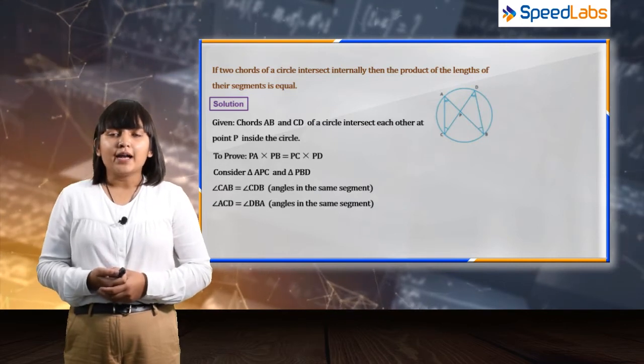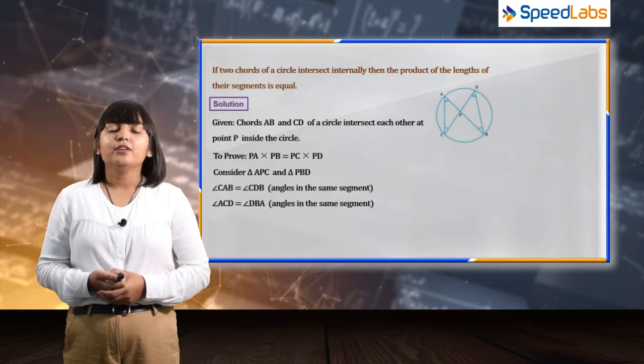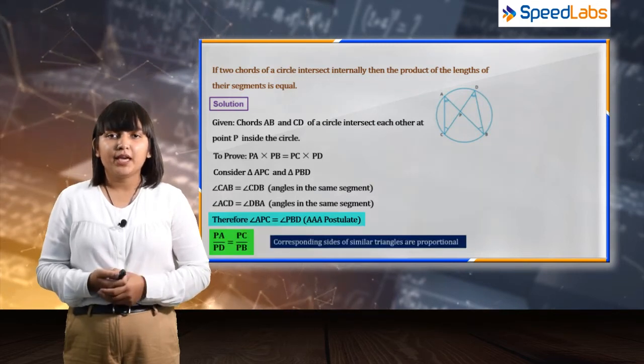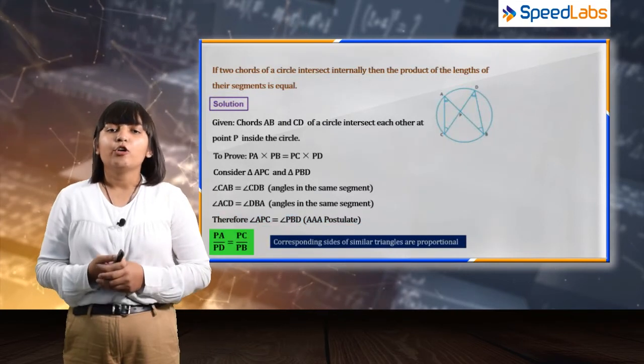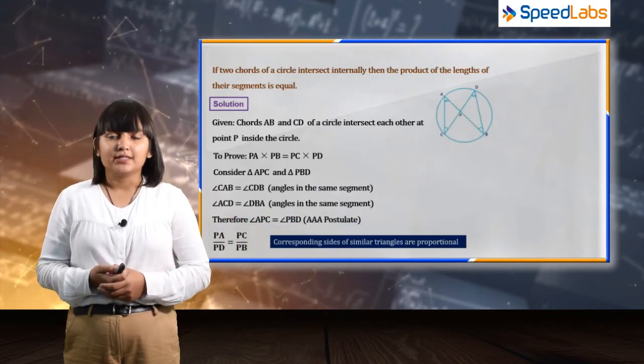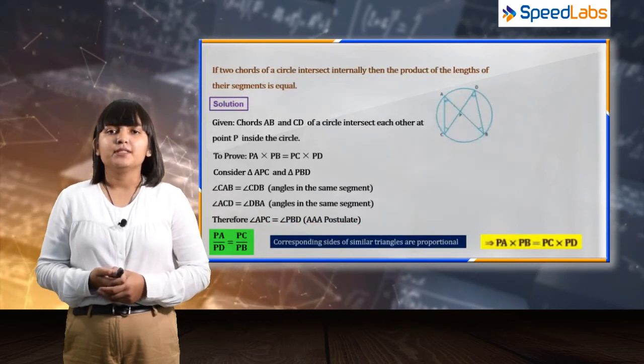We know that the corresponding sides of similar triangles are proportional. So by that relation, we can say that PA upon PD is equal to PC upon PB, and on cross multiplication, we can say that PA into PB is equal to PC into PD.